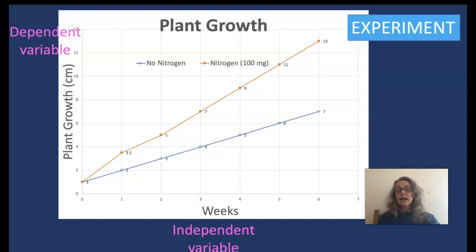And so from this graph, you can see the red line is the plant growing in the presence of nitrogen, and the blue line is the plant growing in the absence of nitrogen. So I have a good conclusion. Is that a good conclusion?